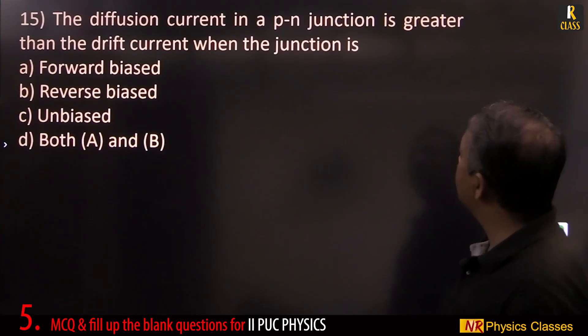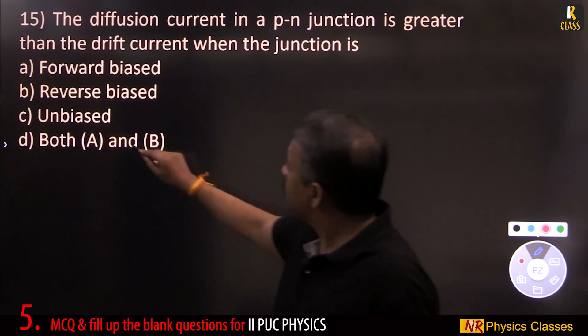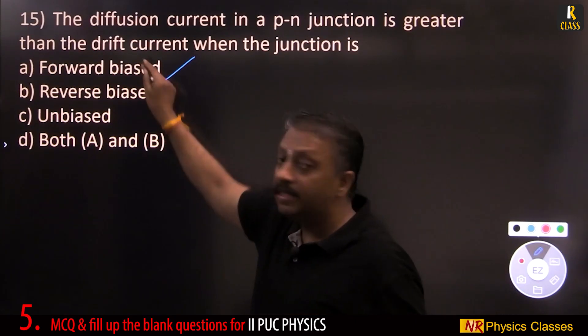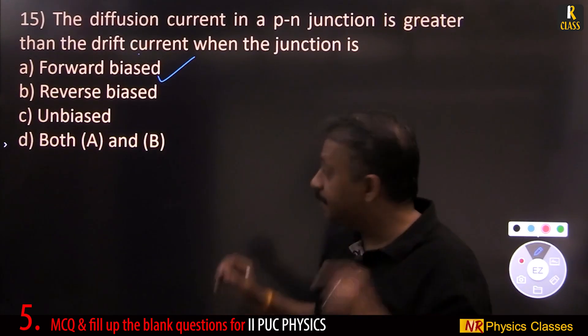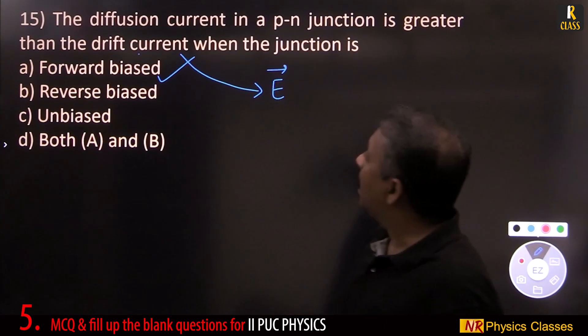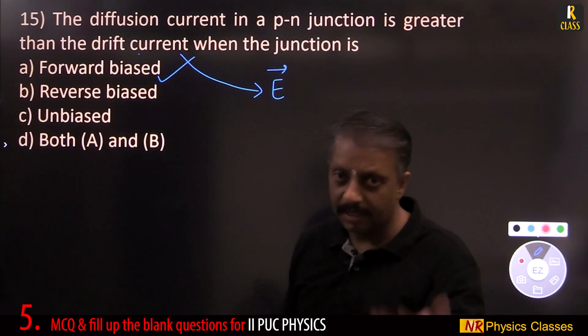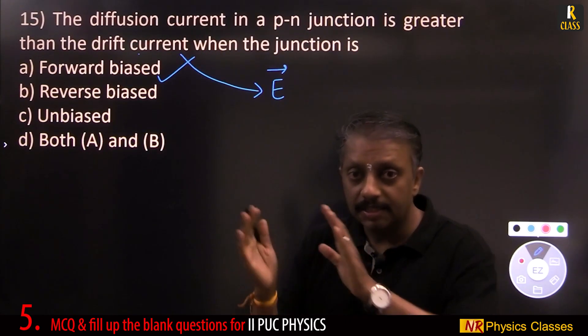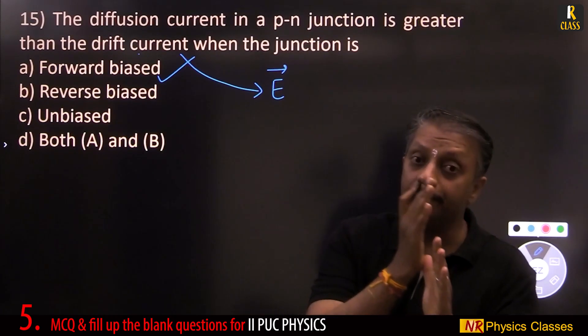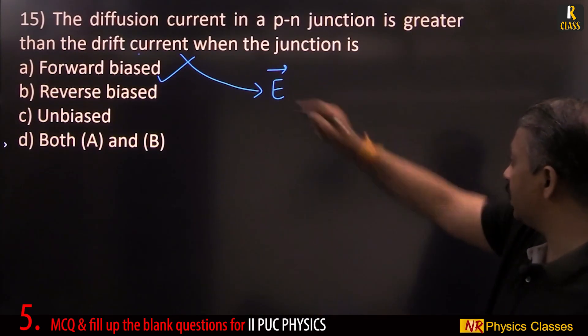The diffusion current in a p-n junction is greater than the drift current in forward bias. Drift current, third chapter recall, drift current is because of electric field. And in forward bias, diffusion current is more. In forward bias, there is electric field but initially there is no conduction. The conduction is because of the diffusion current.